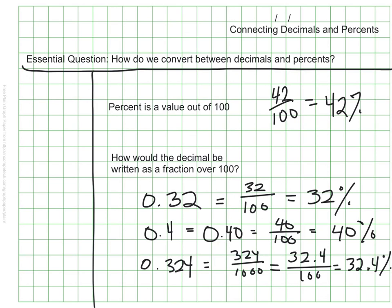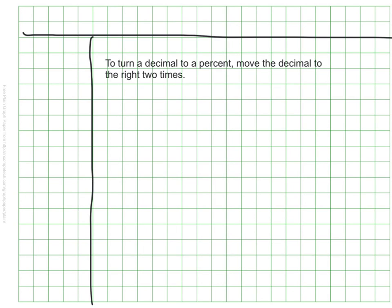If you're looking carefully, you might have noticed something already about this process. The shortcut is that to turn a decimal to a percent, I'm simply moving the decimal — the actual decimal point — to the right two times. That represents multiplying the number by 100, which is what percent is out of.